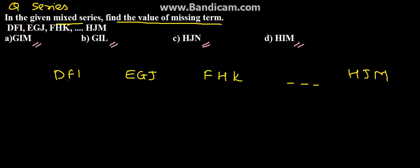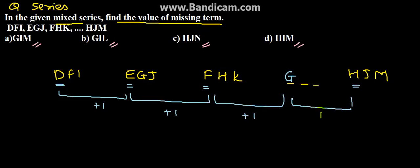So here if we see the first term that is D, and if we see the first term of the second group we have E, then the first term of the third group we have F. So here we can see that it is increasing by plus 1. D, E, F, G, and H. This is increasing by plus 1. So this will also be plus 1, and after this will be H.